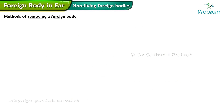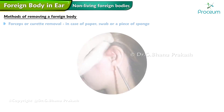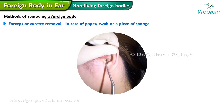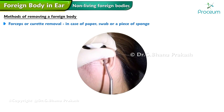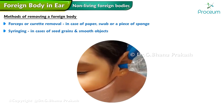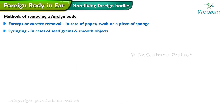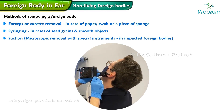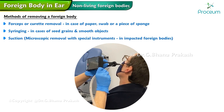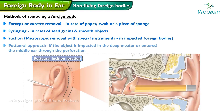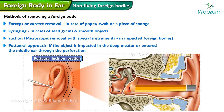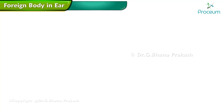Methods of removing a foreign body include: forceps or curette removal in case of paper, swab, or a piece of sponge; syringing in cases of seed grains and smooth objects; suction microscopic removal with special instruments for impacted foreign bodies; and a postural approach if the object is impacted in the deep meatus or has entered the middle ear through a perforation.